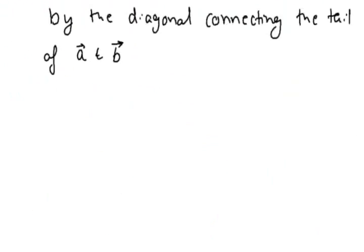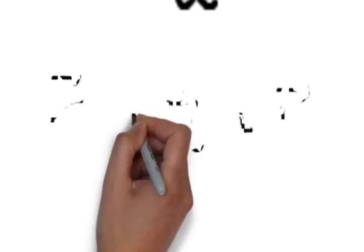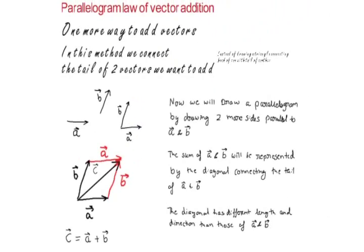As can be seen, the diagonal has different length and direction than those of vector a and b, and it is a different vector. We call this diagonal c vector to be equal to a vector plus b vector.